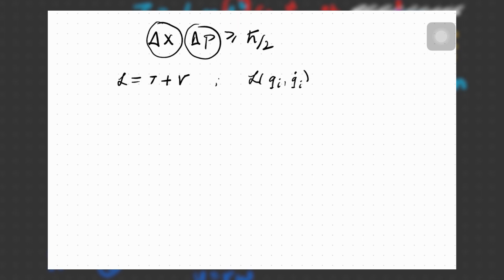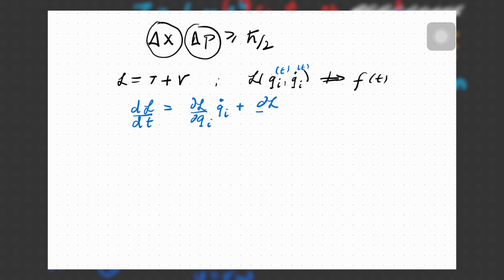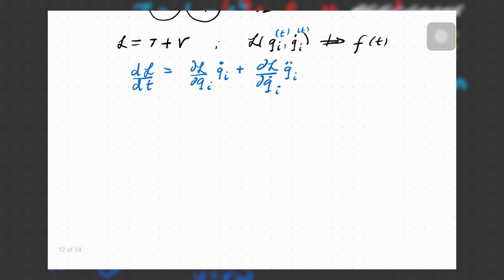Now I'm going to write down the rate of change of this Lagrangian, and for the time being I'm going to assume it is not an explicit function of time — any time dependencies are implicit in the generalized coordinates and their derivatives. So the time derivative of the Lagrangian would simply be: del L over del q_i times q_i-dot, plus del L over del q_i-dot times q_i-double-dot, which is the second derivative of the generalized coordinate.